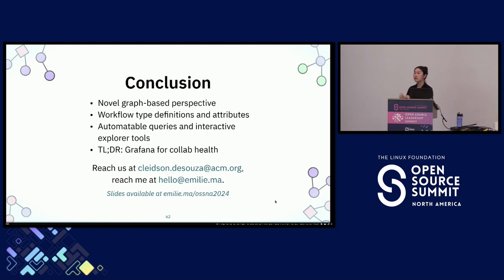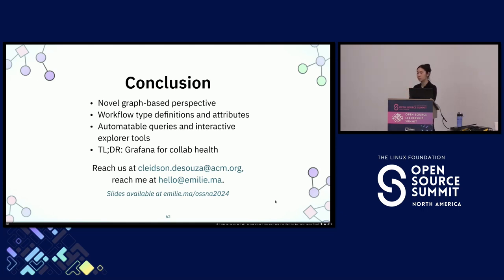Emily clarifies that what one audience member is describing—continuously updated PR lists—is more of a continuously updated tracker, whereas what they were observing was more like finite start-to-end updates, such as Apache Dubbo's weekly updates or release candidate PRs before merging into the mainline branch. They observed very few of those continuously updating tracker list patterns, which may just depend on the projects studied.